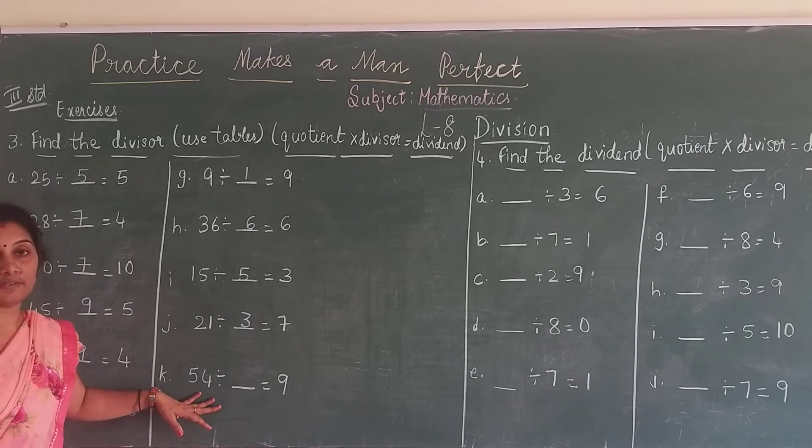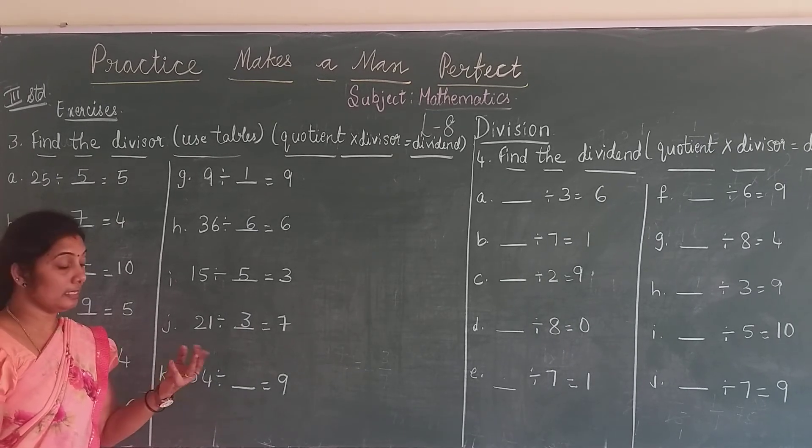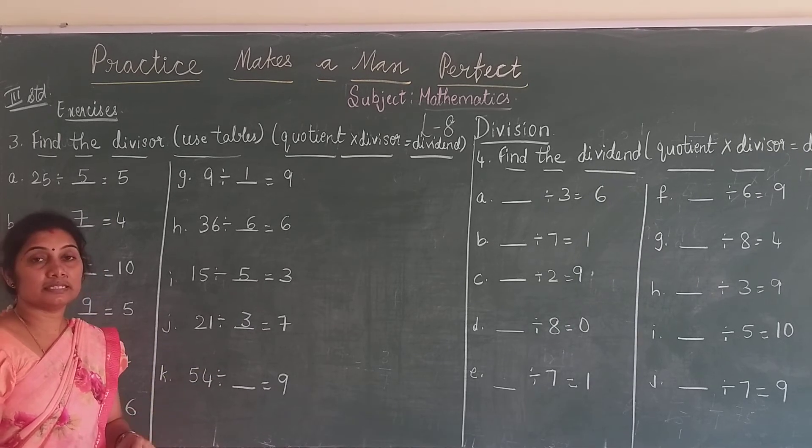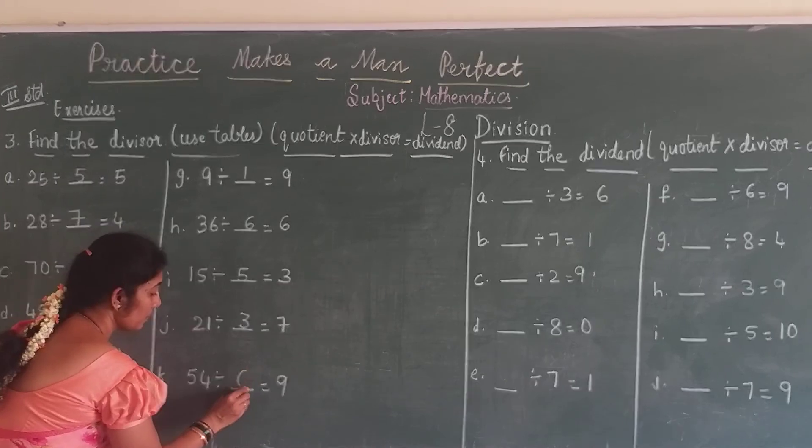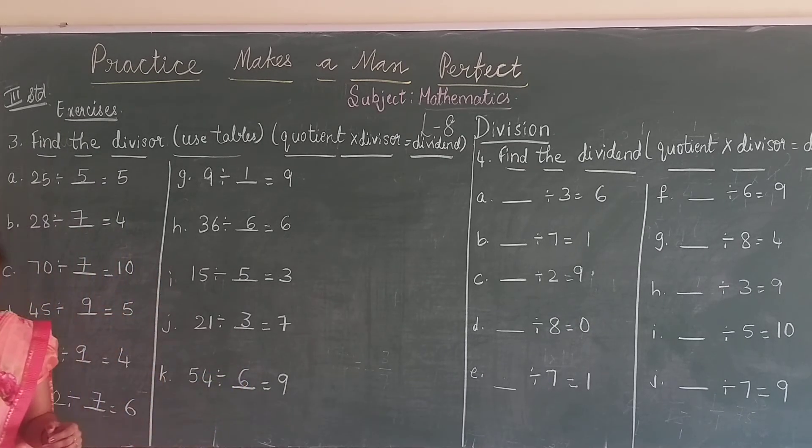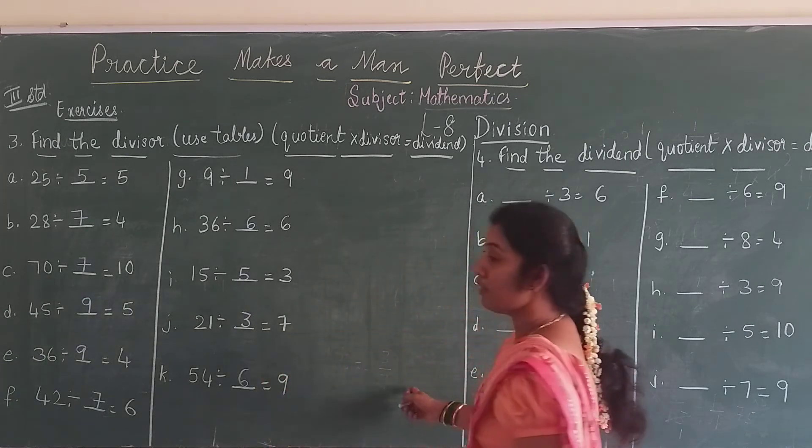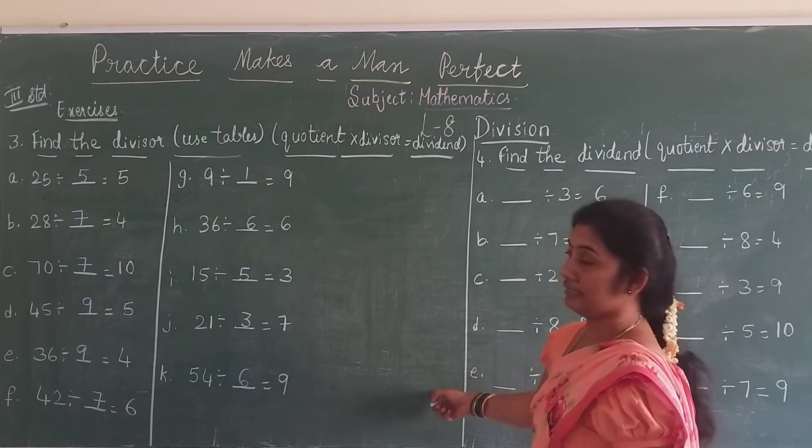54. 9 ones are 9, 9 twos are 18, 9 threes are 27, 9 fours are 36, 9 fives are 45, 9 sixes are 54. So 6 is your divisor. Got it? Here, next.